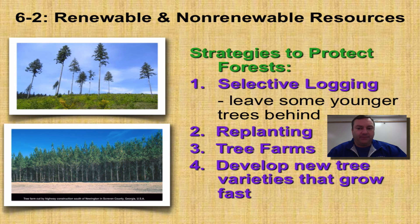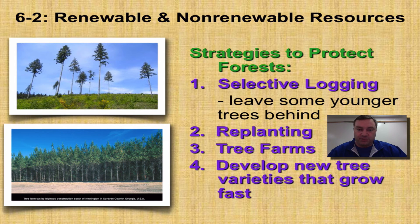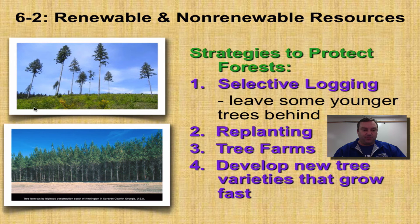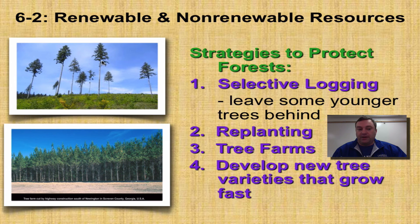So how can we keep this from happening? Here are four things we can do to protect forests. Number one is selective logging — don't cut down all the trees. Leave some of the younger ones there. They'll grow up, flower, produce seeds, and new trees will come up. In this picture you can see an area that's been logged, but they didn't cut down all the trees. These conifers will produce pine cones, and over time new trees will come back.